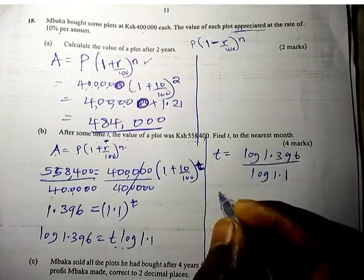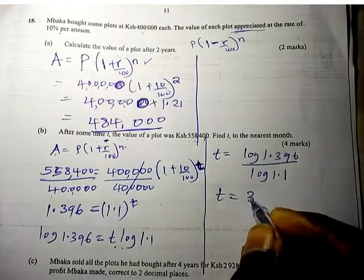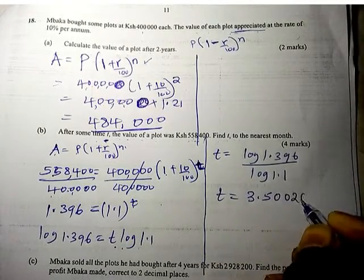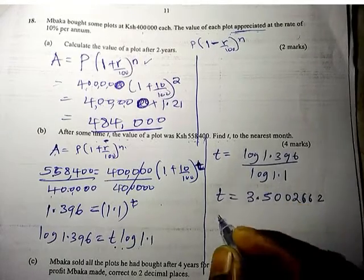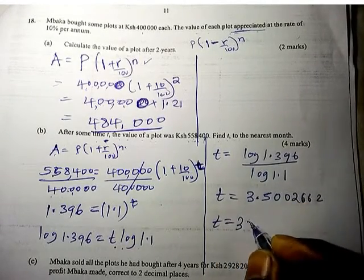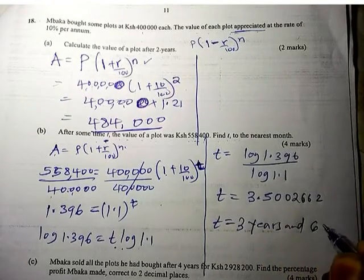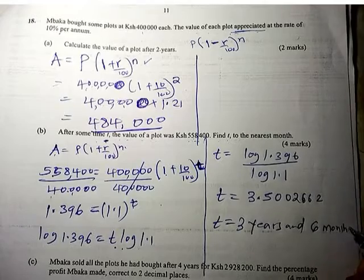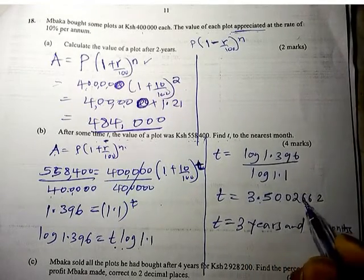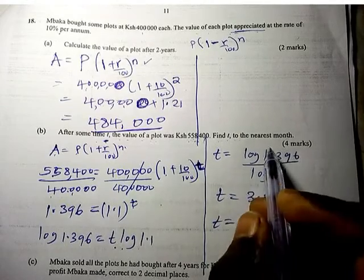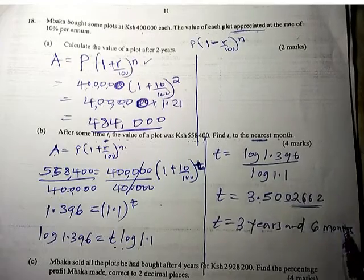This will give us t equals 3.5002662, so t equals 3 years and 6 months. We round off to the nearest month, so it is 3 years 6 months.